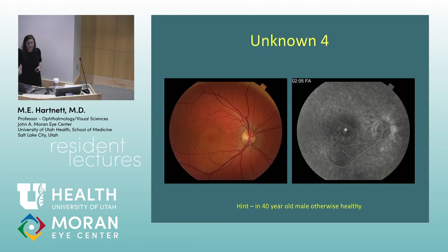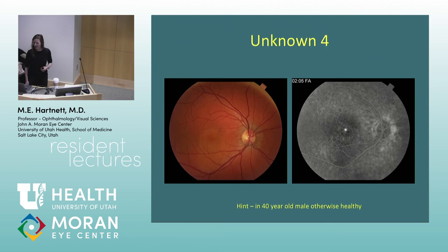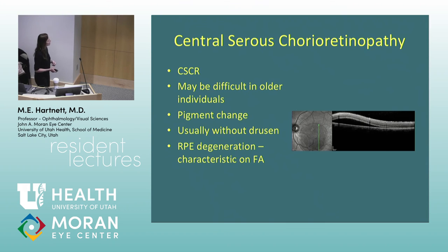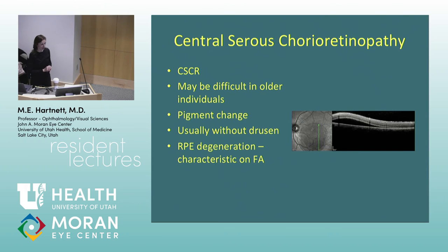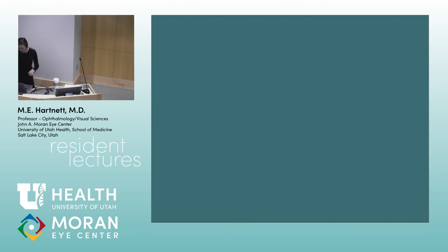Central serous chorioretinopathy — a 40-year-old man. The most common finding on fluorescein in CSCR is actually not the smokestack; the smokestack is dramatic but not most common. It usually occurs without drusen, though it can occur at age 60 with drusen, making it hard to distinguish from other conditions. Importantly, CSCR can be worsened or can recur with even topical steroids, including over-the-counter products used on the skin.